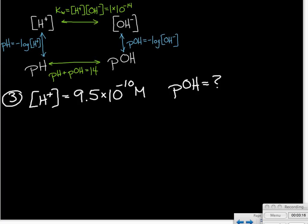Our next example is a little bit more complicated because it's going to require two steps. We're given the hydrogen ion concentration, and we're asked to find the pOH. So looking at our roadmap up above, you can see there are kind of two routes we could go.